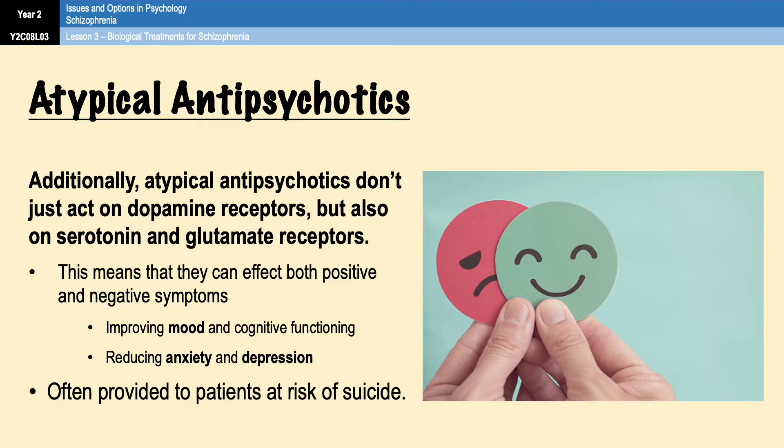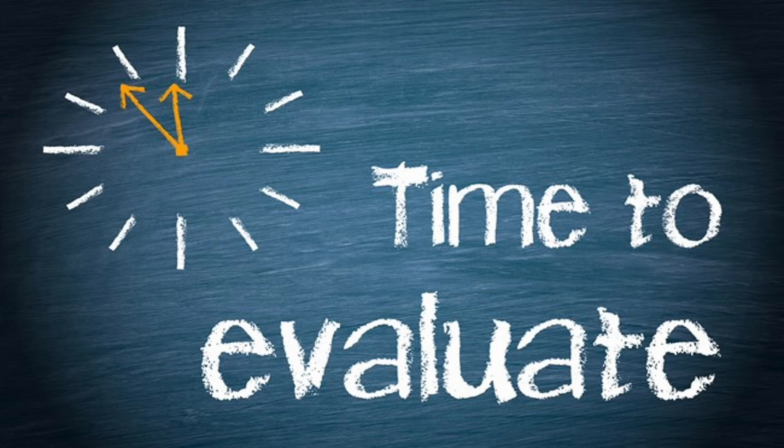This is also important because it suggests that atypical antipsychotics may be useful in treating negative symptoms as well as positive symptoms. Okay, so we've got a couple of differences there between atypical and typical antipsychotics. So that was the outline — nice and short. We're going to move on quite swiftly to the evaluation points. I've got four points for you, and then we'll have a quick look at the six-mark outline before finishing up.